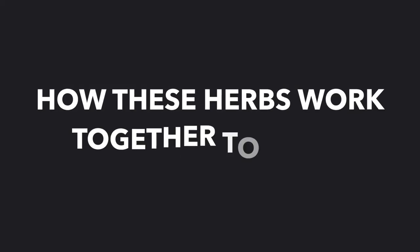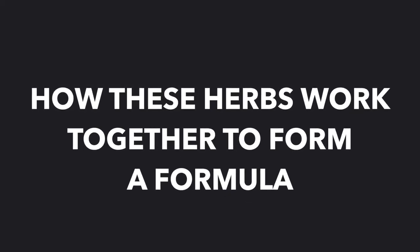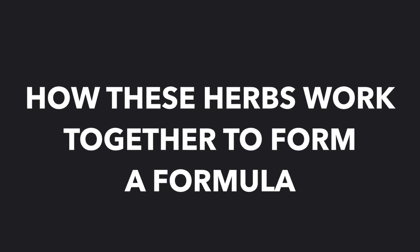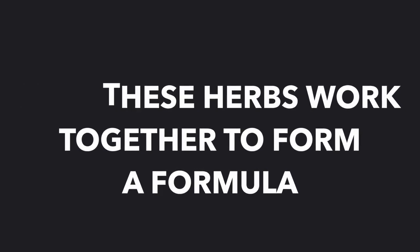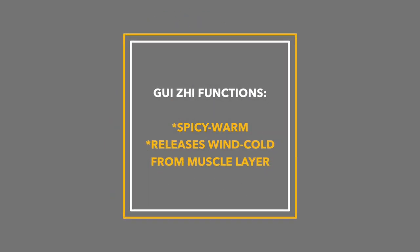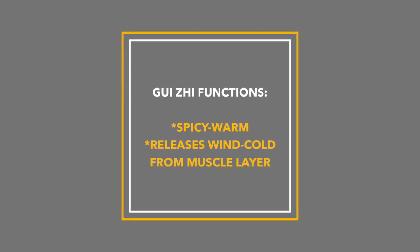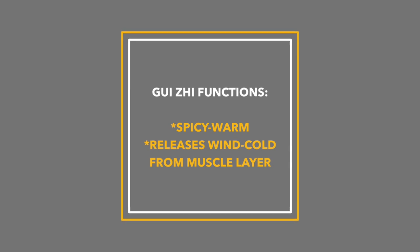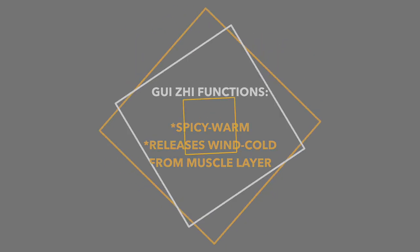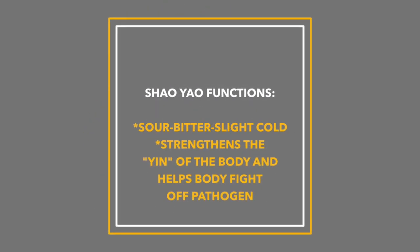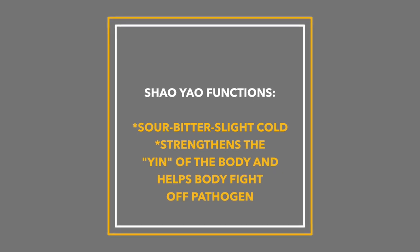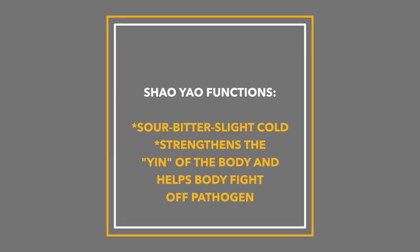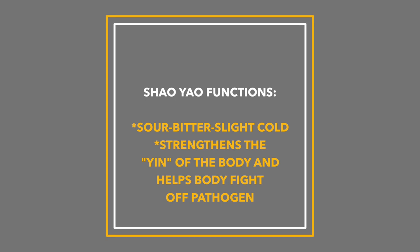According to Bensky, this is how each herb works together to form the whole of gui zhi tang. The core herb, gui zhi — which is cinnamon twig — is considered acrid, so spicy and warm, and it releases what's called wind cold from the muscle layer. It's combined with the second herb, bai xiao or xiao yao, which is peony, to strengthen the yin part of the body. Combined, they help the body expel anything that's caught — in other words, if you caught a germ — and it strengthens the body's inherent defenses.